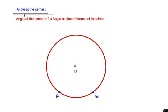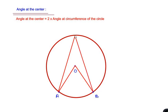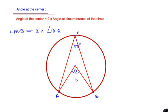Now let us use the angle at the center theorem. The theorem states that the angle at the center is two times the angle at the circumference of the circle. For example, with a circle centered at O and two points A and B, the angle at the center AOB equals two times the angle at the circumference ACB. So if the angle at the circumference is 50 degrees, the angle at the center is exactly 100 degrees.